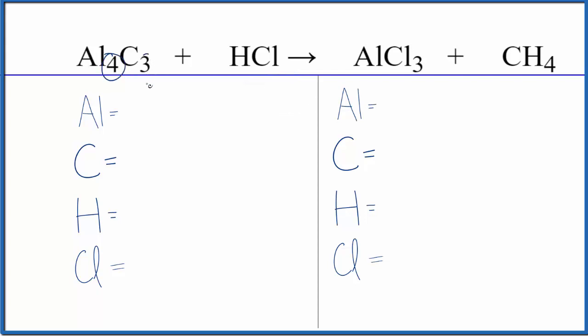Four aluminum atoms, three carbon atoms, and then hydrogen, one of those, and one chlorine. Product side we have one aluminum, one carbon, four hydrogens, and three chlorine atoms.